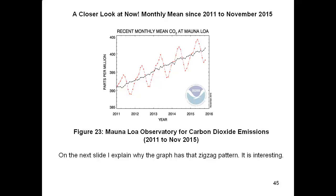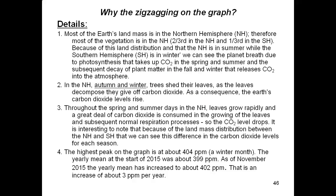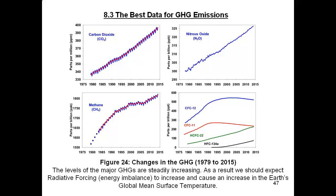Here's a closer look at the Mauna Loa data. You'll notice a zigzag pattern on the graph — on the next slide I explain why it has this pattern, which is very interesting. You can pause the video to look over the details. These graphs show changes in the annual greenhouse gas index between 1979 and 2015, with 214 stations in 51 different countries collecting data relevant to worldwide greenhouse gas atmospheric levels. The levels of the three major greenhouse gases are steadily increasing. As a result, we should expect radiative forcing or energy imbalance to increase and cause an increase in the Earth's global mean surface temperature.